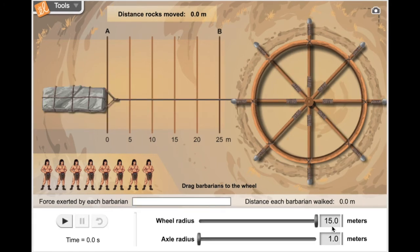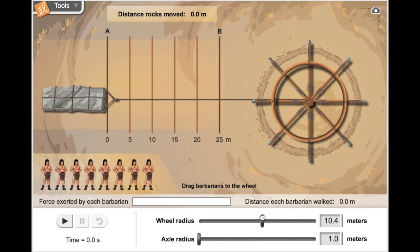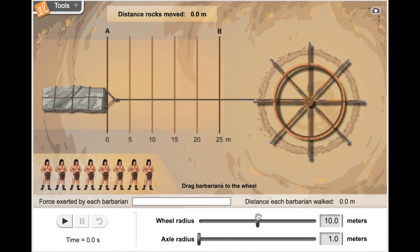One way to make a wheel and axle multiply your force is to make the axle radius smaller and smaller. What about the wheel, though? Let's focus on the wheel now. So I'm going to set the wheel radius to 10 meters, and I'm going to leave the axle radius as 1.